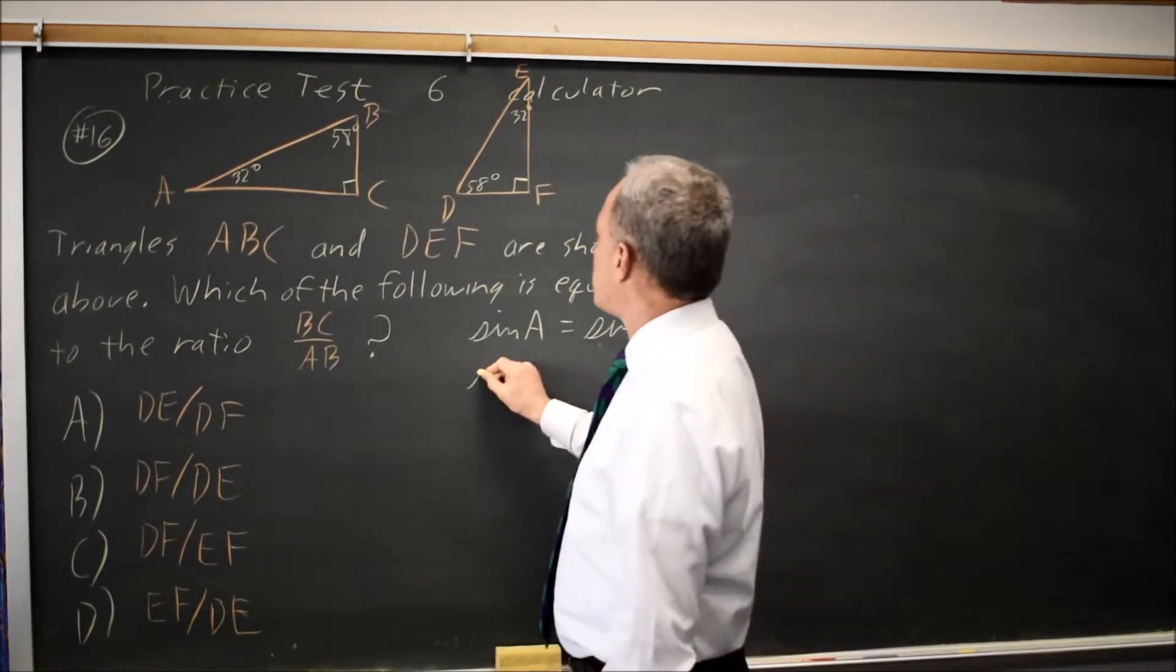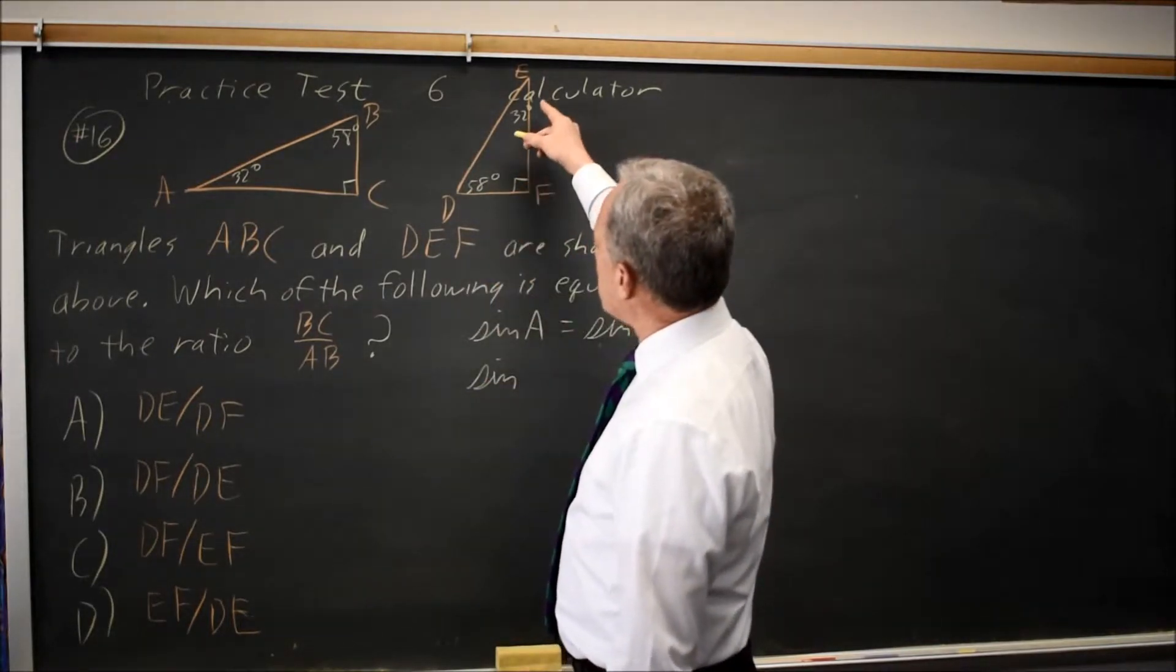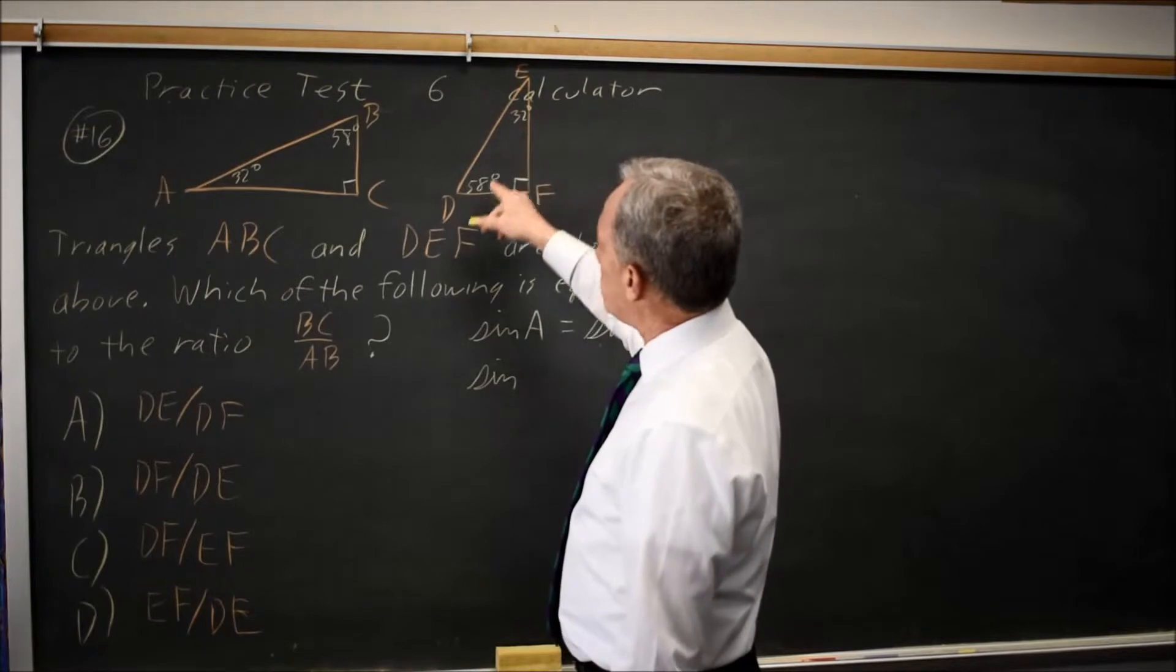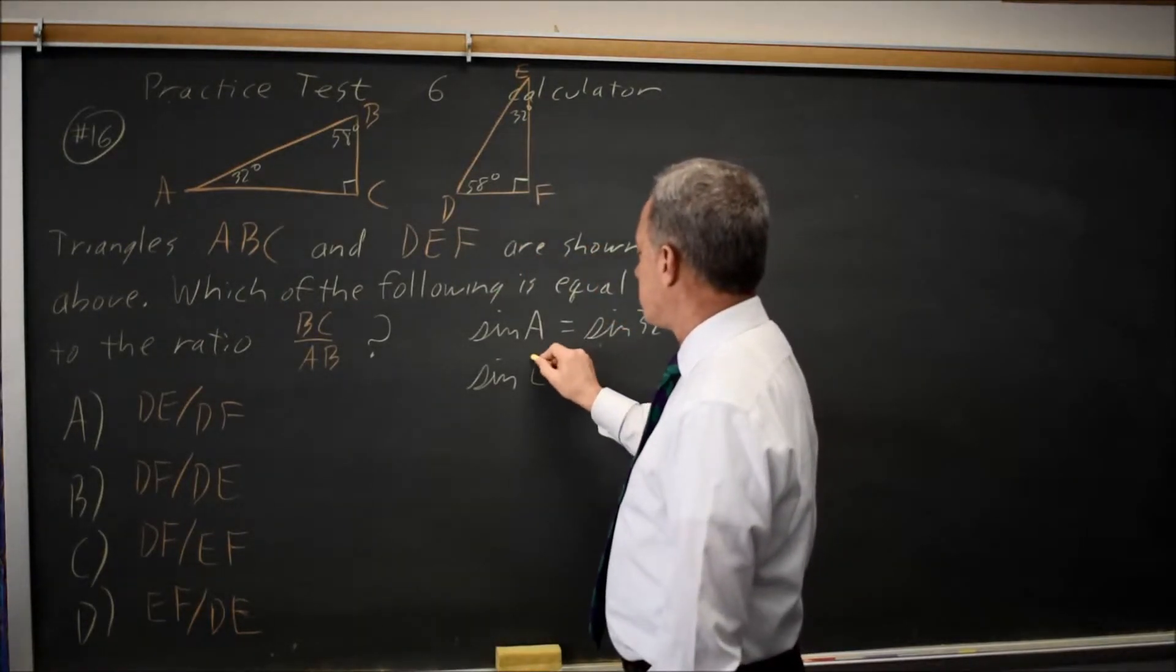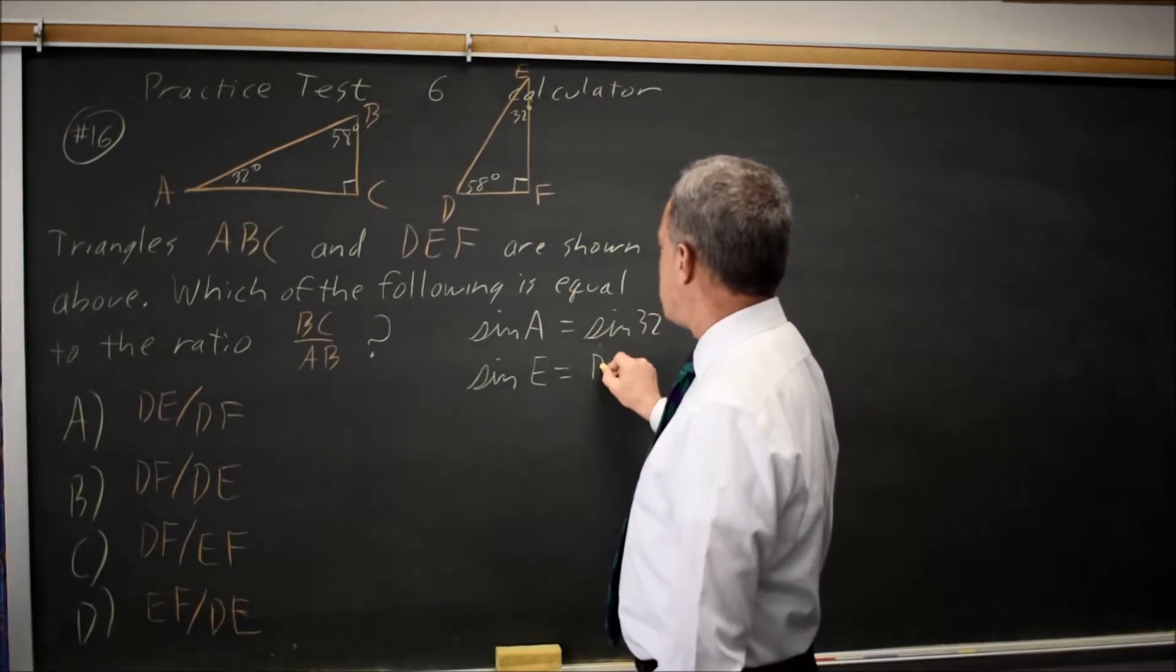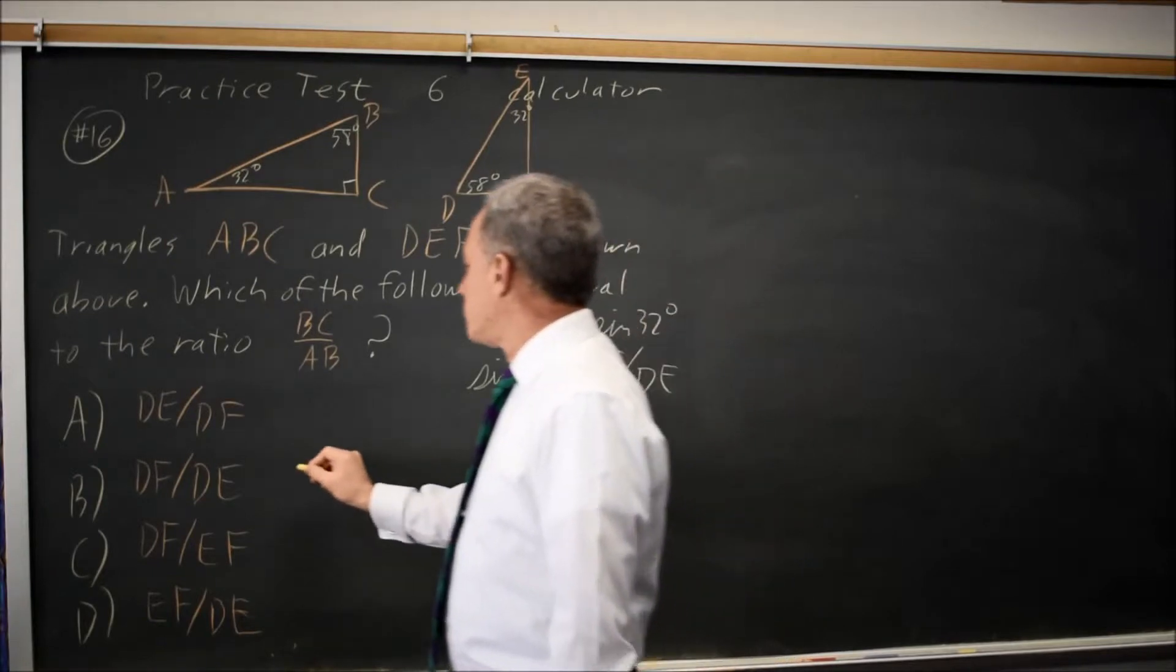The sine of angle E would be equal because that is also sine of 32. And that is the opposite, DF over the hypotenuse DE, which is choice B.